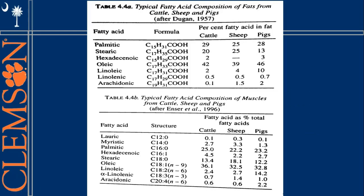I wanted to push this table up here so you can see the percentages of each fatty acid within each species. You might think that pigs would be drastically different from cattle and sheep, but all three are eerily similar. The two I'd point out are oleic acid, which shows about a 4% difference, and you can also see oleic has a significant difference across cattle, sheep, and pigs. It's particularly interesting that sheep don't even have hexadecanoic acid.